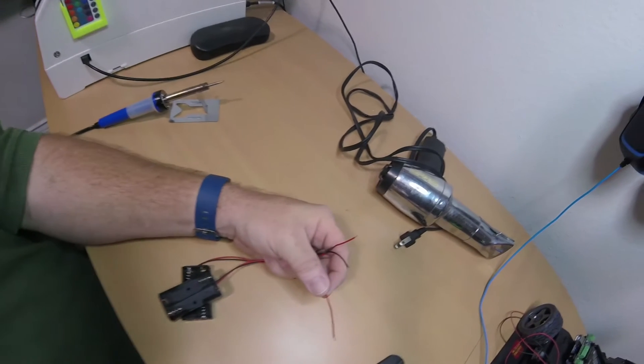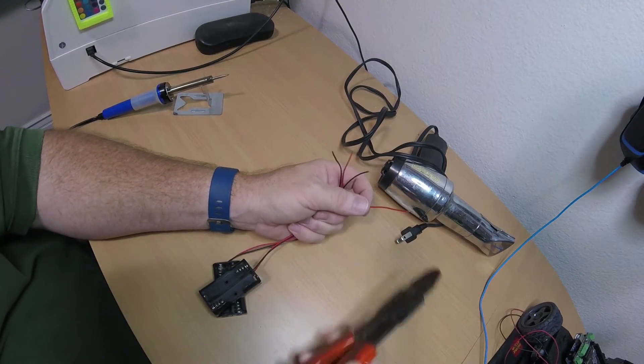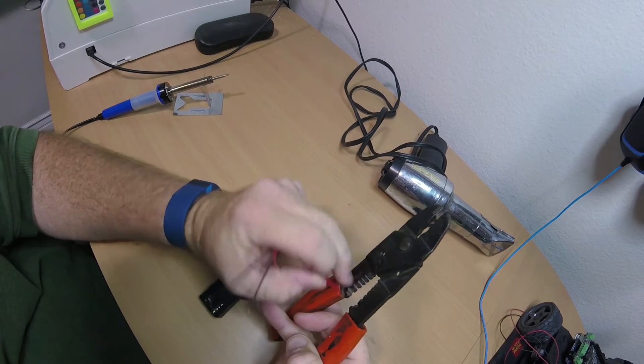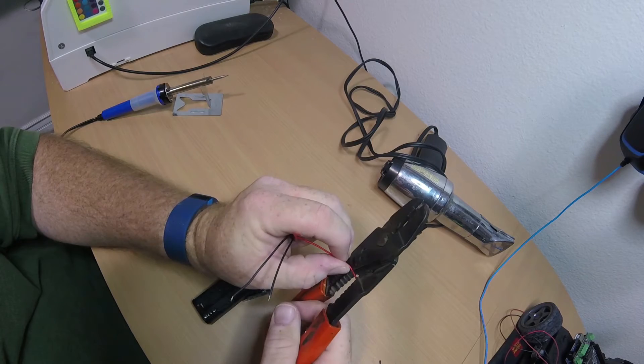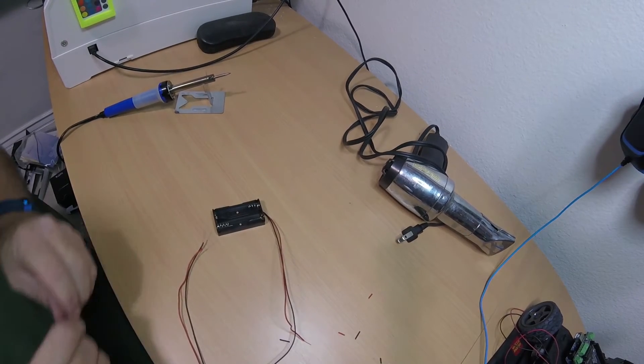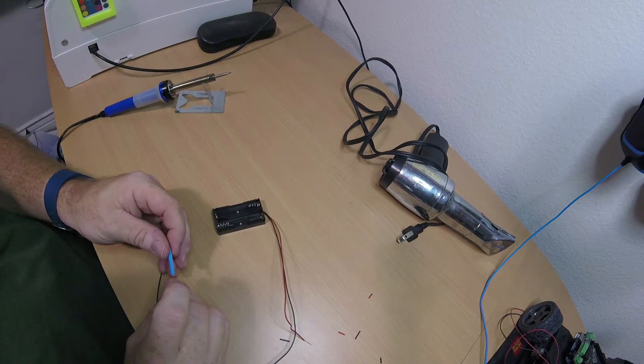I'm stripping two wires on the AA battery holders. I'm using two of them and wiring them in series since I didn't have a single four-battery holder. I'm going to go ahead and place heat shrink over one side of it. You have to do this before you solder them together.